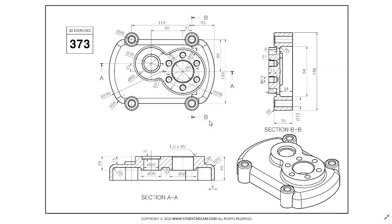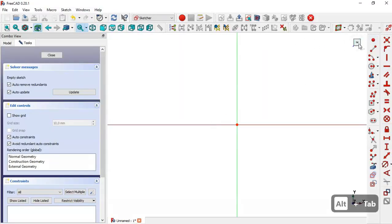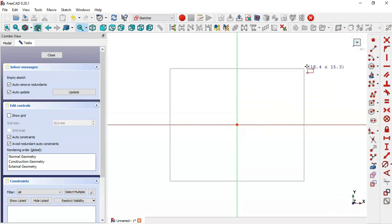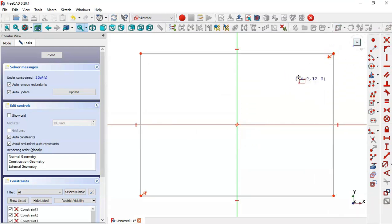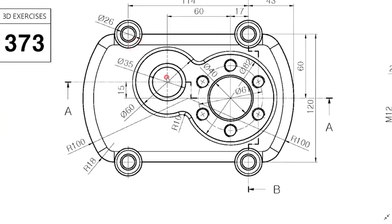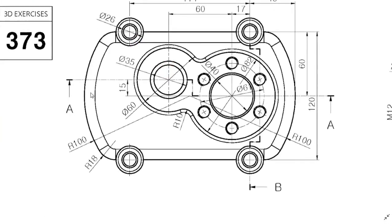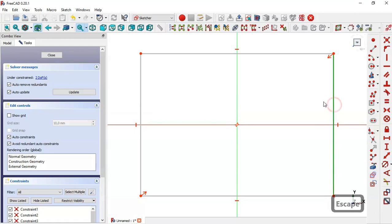In this sketch we selected the center rectangle tool, clicking the origin point and drawing the rectangle. Next, we need to draw two arcs. These two arcs have the same radius and the same center point. The distance between this line and this line is 120.